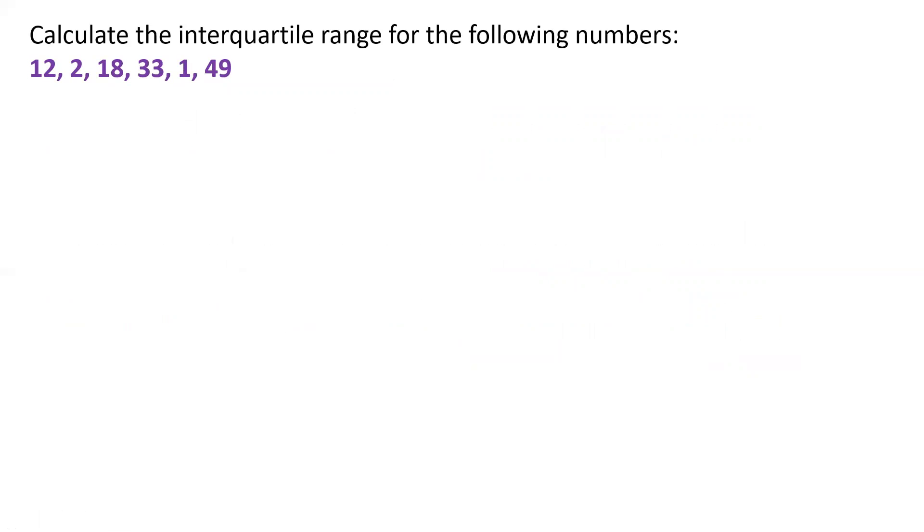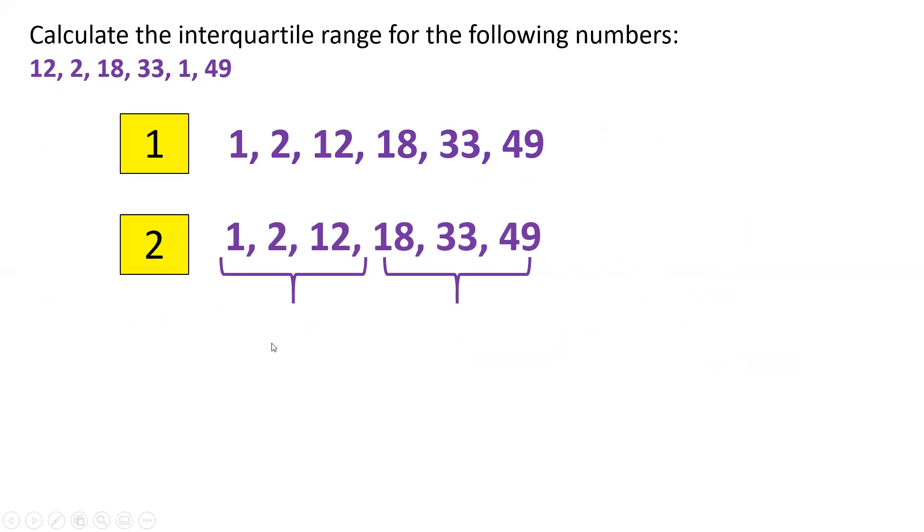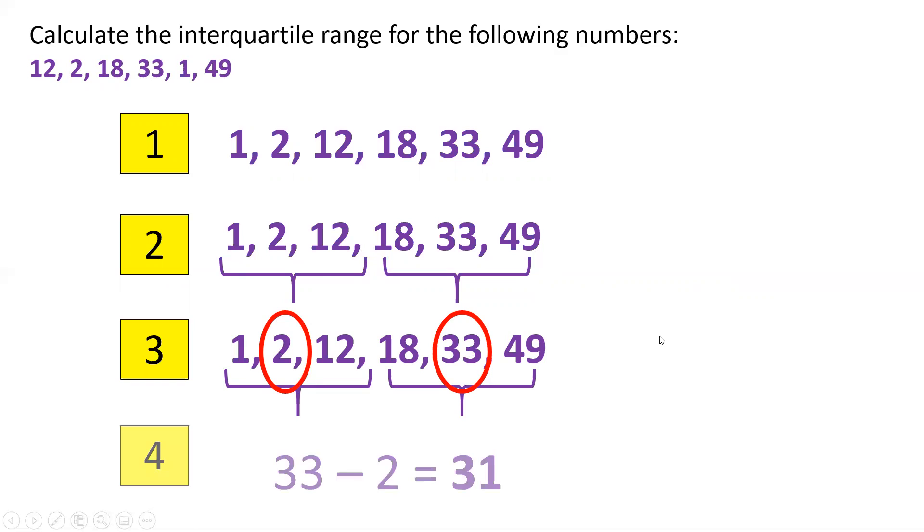And finally calculate the interquartile range for the following numbers. Let's remember step one, put them in order from lowest to highest, so from 1 to 49. Step two, find the lower quartile and the upper quartile. Well here it's very easy because there's only six numbers. So you divide down the middle, we've got a line down here and here we've got our lower quartile and our upper quartile. Then you simply find the median for each side and again it's very easy here, we simply find the middle number. So 2 is the median here, 33 is the median on this side and then we do 33 take away 2 and the answer is 31.